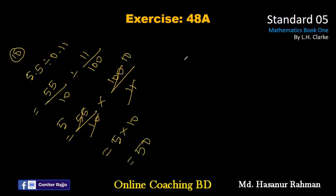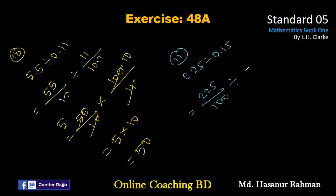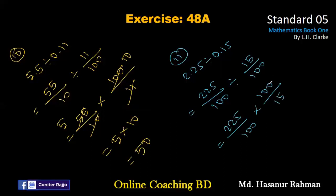Now number eleven says 2.25 divided by 0.15. 2.25 actually represents 225 by 100, and 0.15 represents 15 divided by 100. So we have 225 divided by 100 multiplied by 100 divided by 15. We cancel 100 and 100, and 225 divided by 15 gives us 15. So the final answer should be 15.